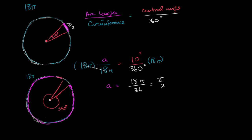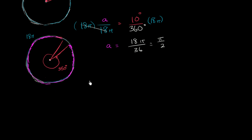Well, same exact logic. The ratio between our arc length, a, and the circumference of the entire circle, 18π, should be the same as the ratio between our central angle that the arc subtends, so 350, over the total number of degrees in a circle, over 360.